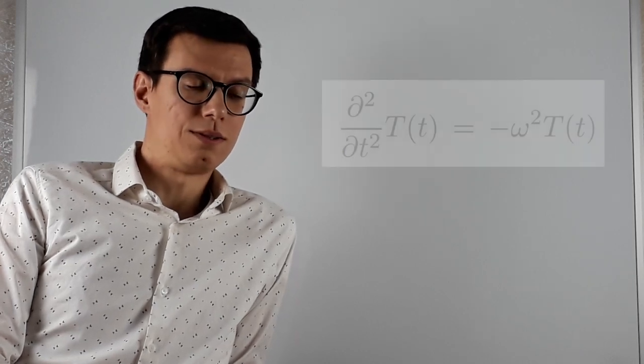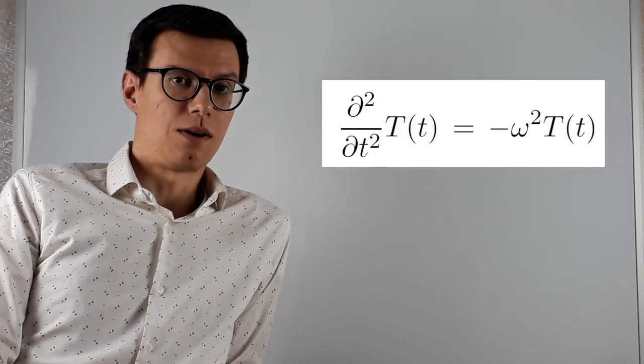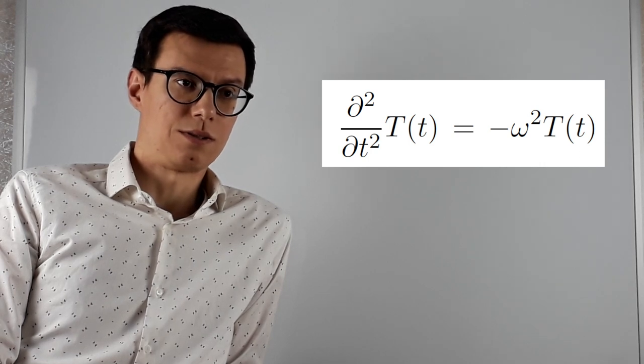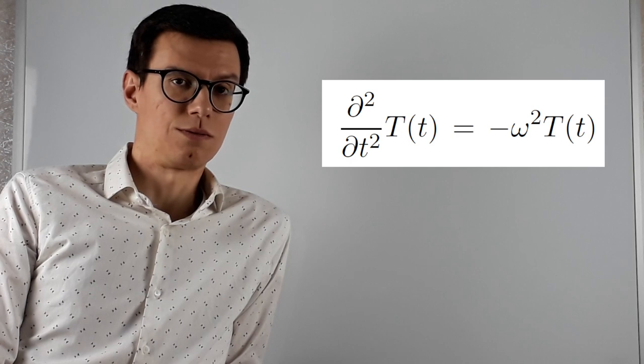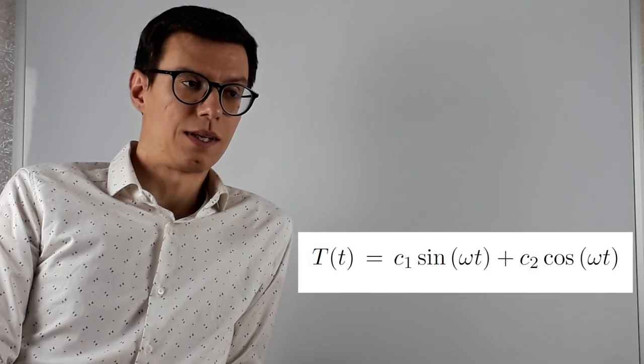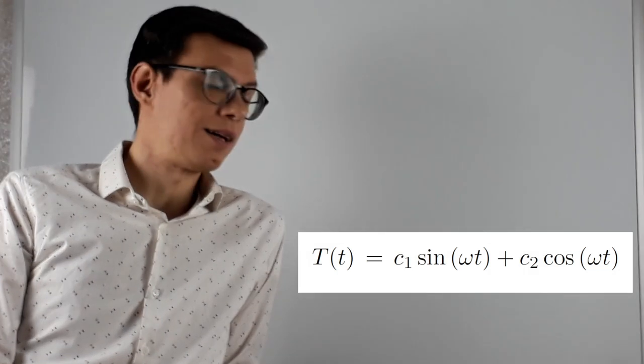So we start with this second-order differential equation in capital T in order to find the solution for time. And we have that the solution of this equation is a linear combination of sine and cosine.